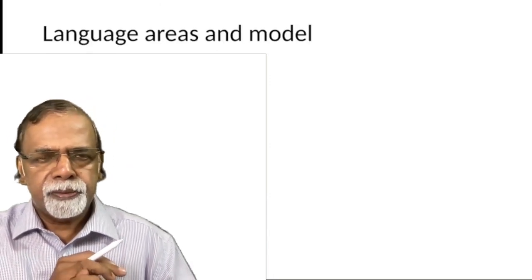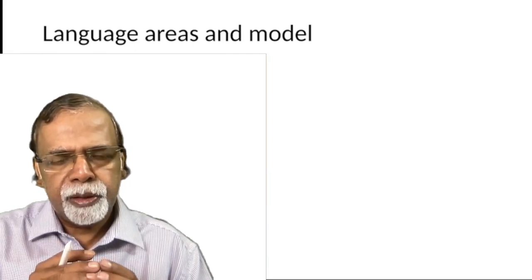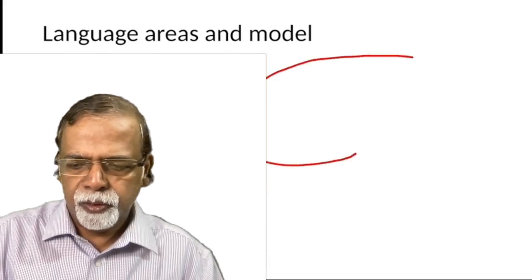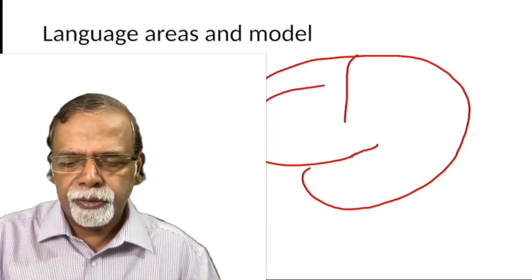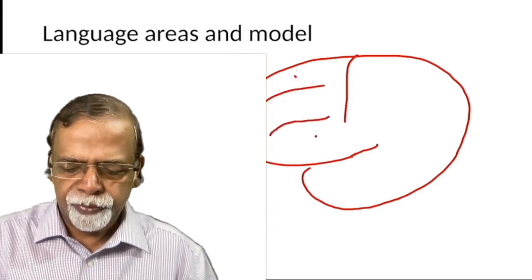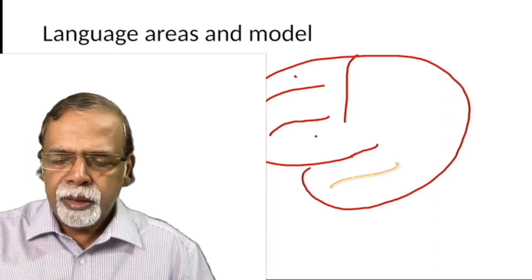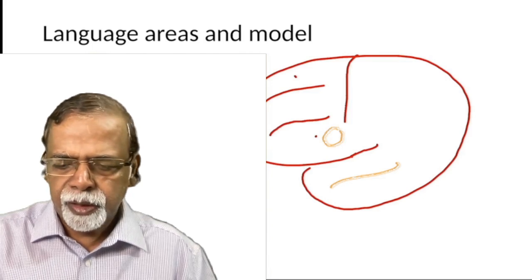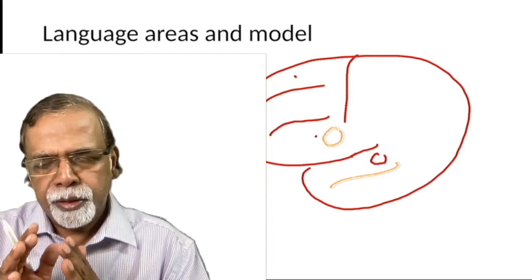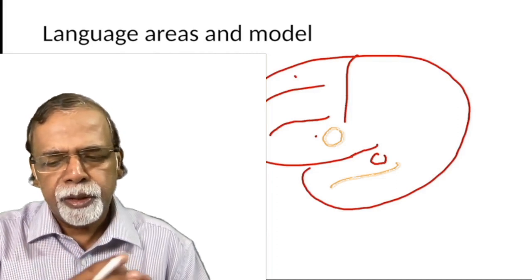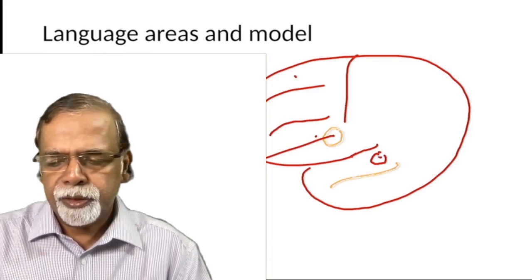To understand aphasia, we should have some models. The one I am going to discuss is the Wernicke-Geschwind model. Draw this picture: this is the Sylvian fissure, this is the central sulcus. The frontal lobe is divided into superior, middle, and inferior convolutions, and the temporal lobe is divided into superior and inferior parts. Here is the motor speech center and here is the sensory area. The motor part of speech is anterior and the sensory part is posterior.